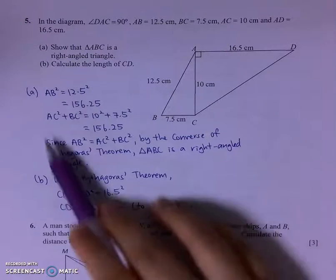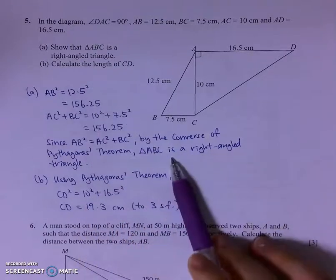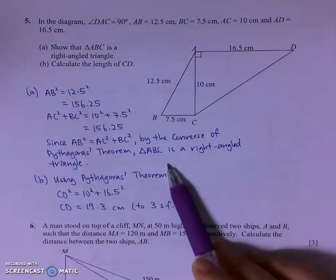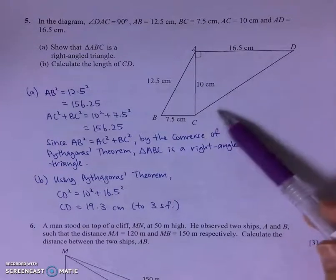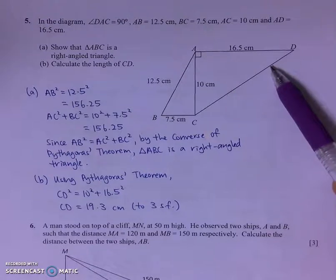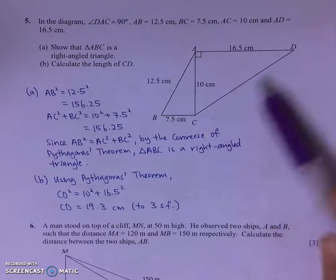Do note how you present your answer to prove that it is a right-angled triangle. For part B, they want us to find the length of CD. We can easily use Pythagoras theorem to find the length of CD.